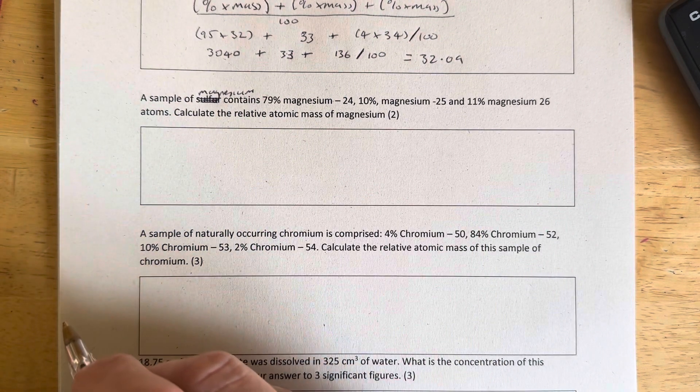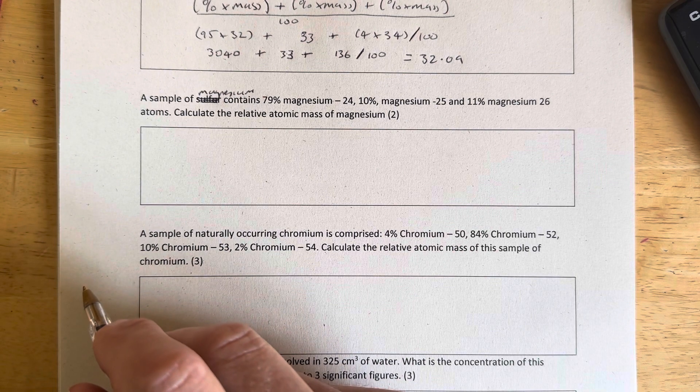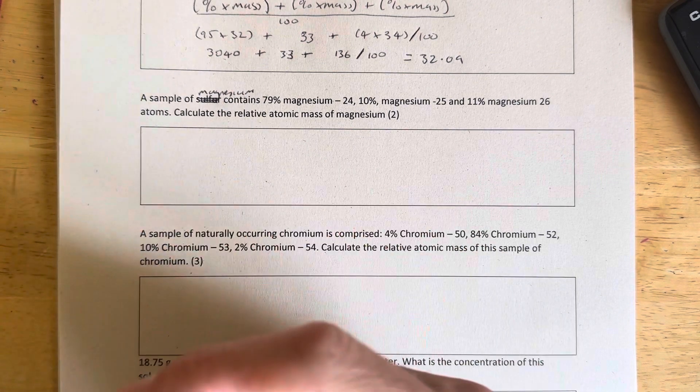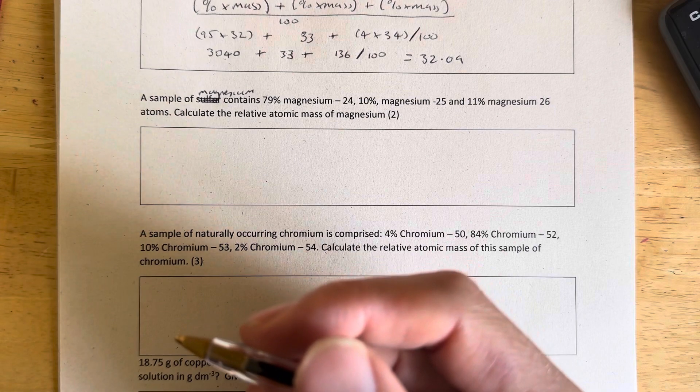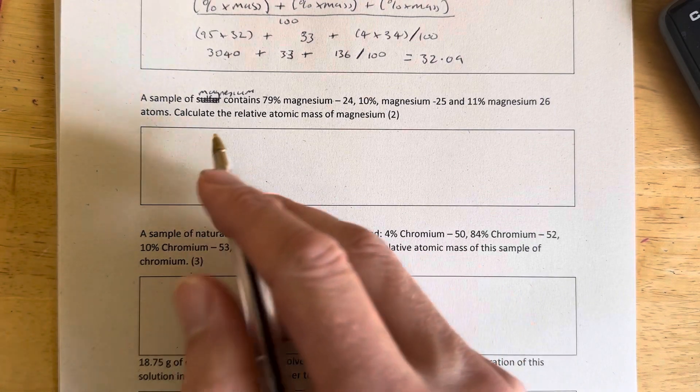Relative atomic mass is an average mass of all the atoms in a sample. We can have different atoms of the same element. These are called isotopes and they occur naturally.